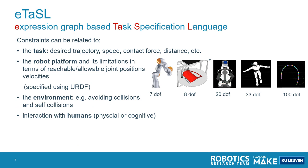In ETASL, as a constraint-based task specification framework, we can specify constraints typically related to the task: the desired trajectory, speed, contact force, or distance. Constraints can also relate to the robot platform and its limitations in terms of reachable and allowable joint positions and velocities — typically specified using standard URDF. Constraints can also describe things in the environment or interactions with humans. Importantly, all these different items are quite separately specified, making this approach very modular. The same task can be used on a different robot platform, in a different environment, and with or without human interaction.